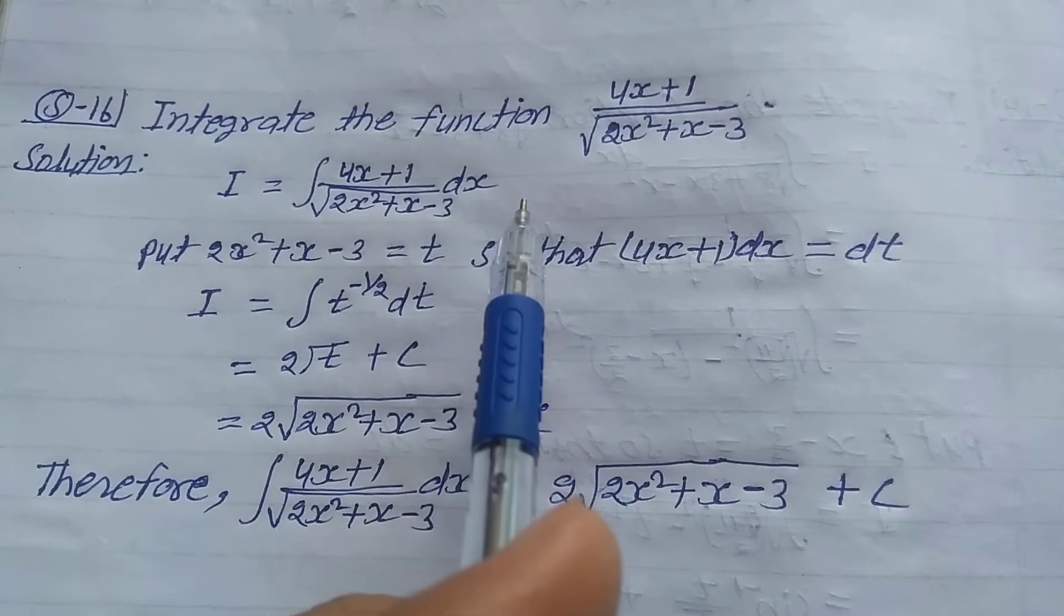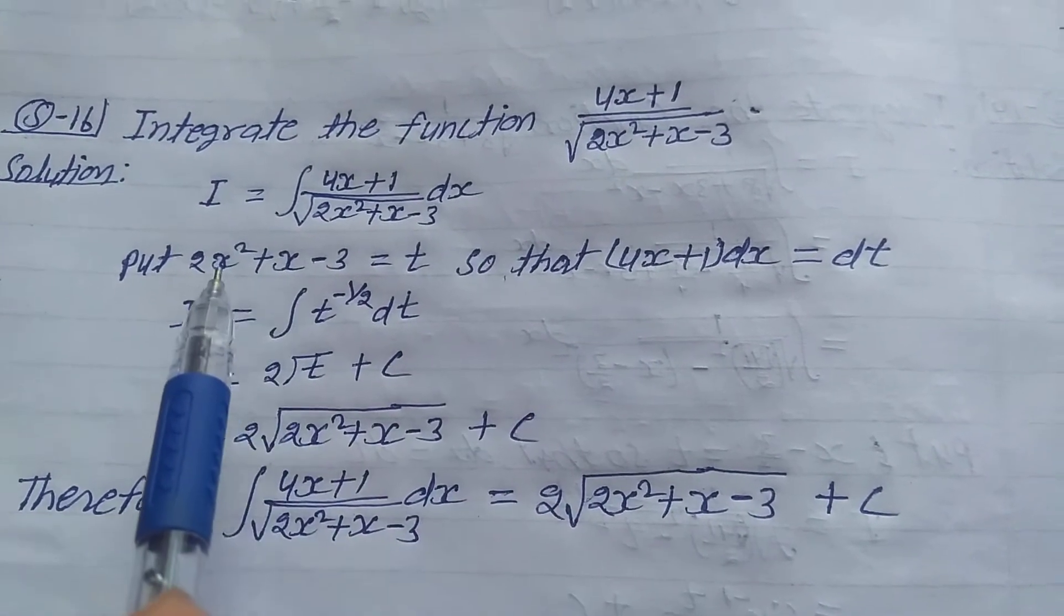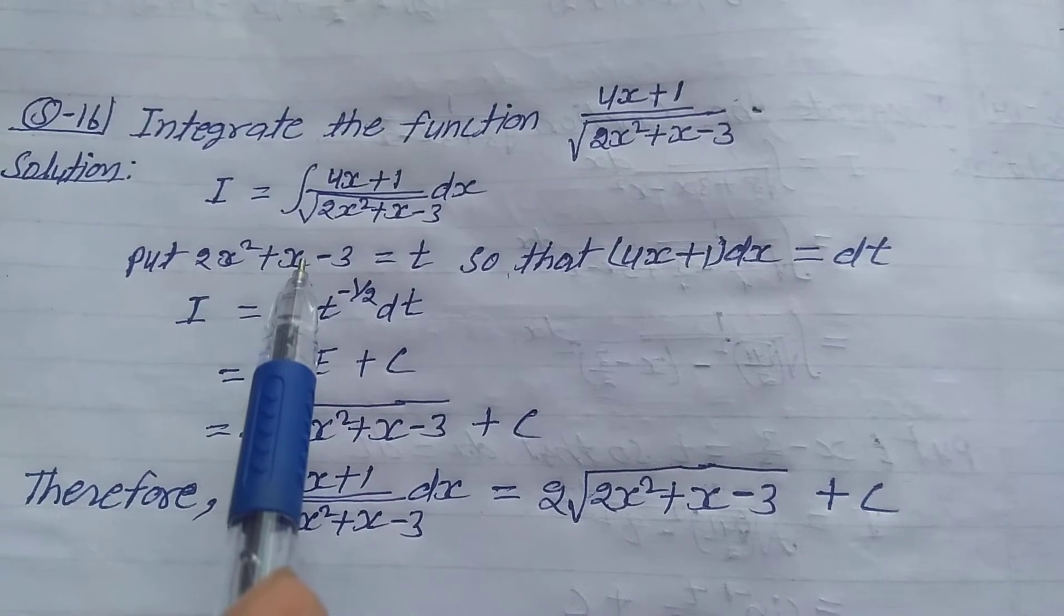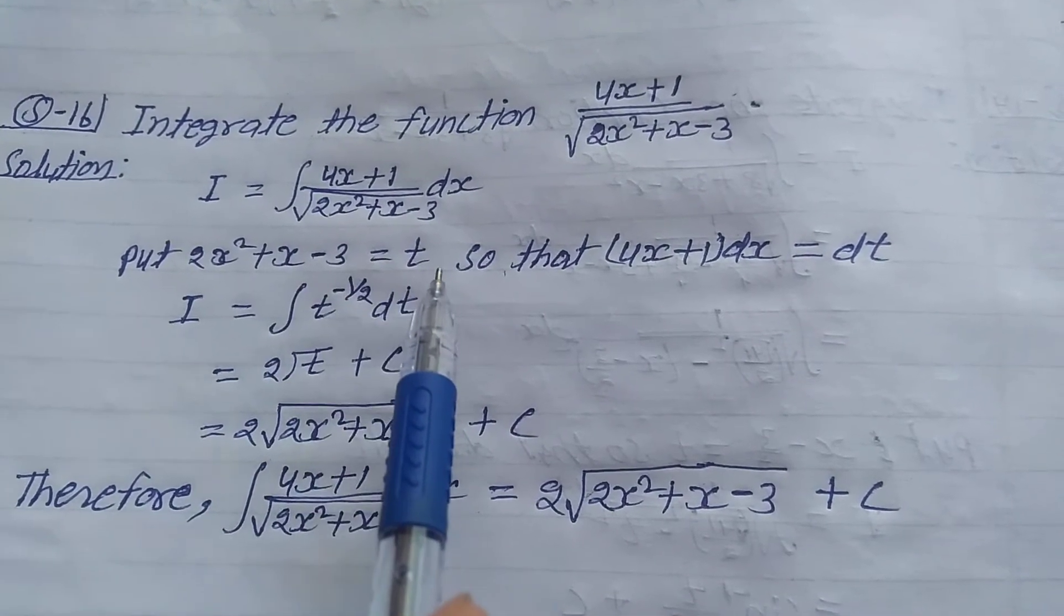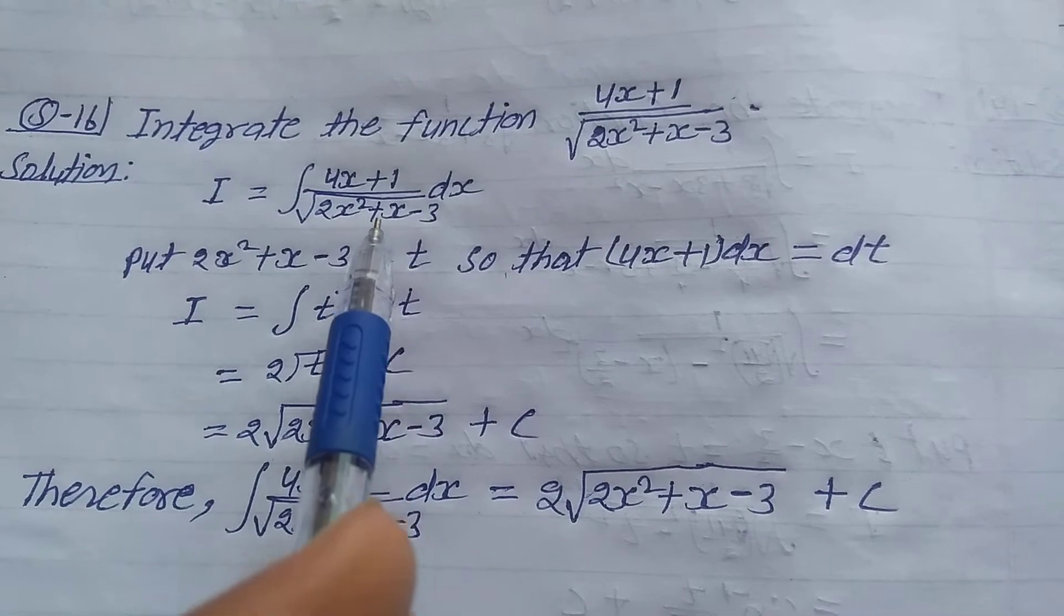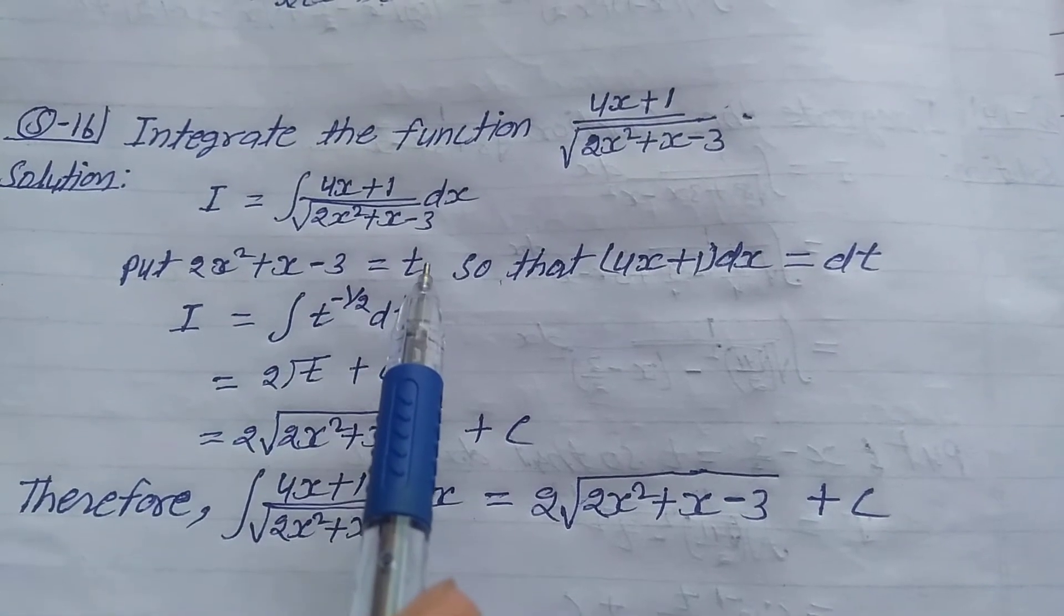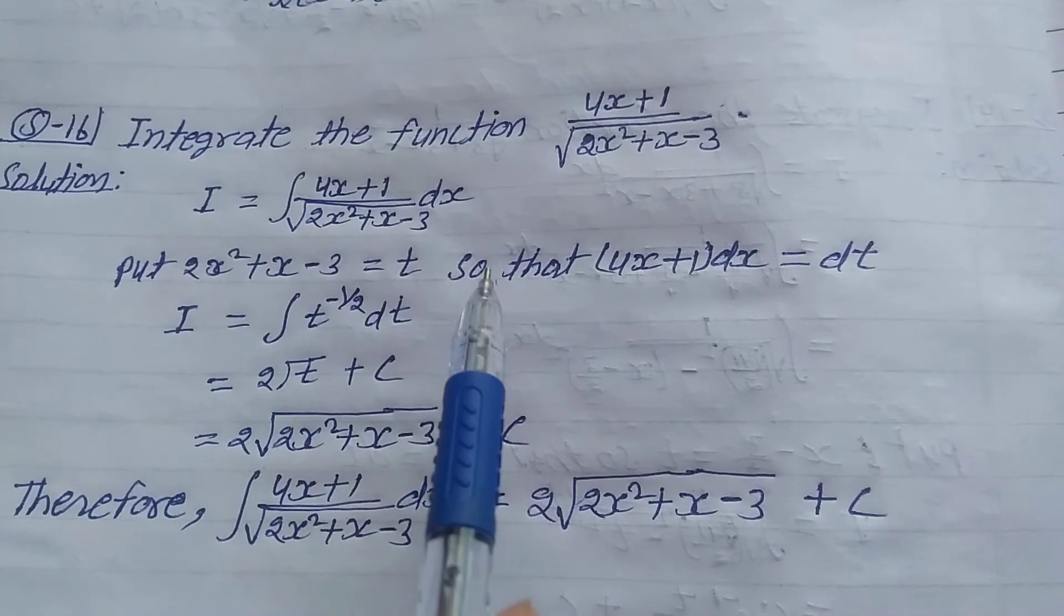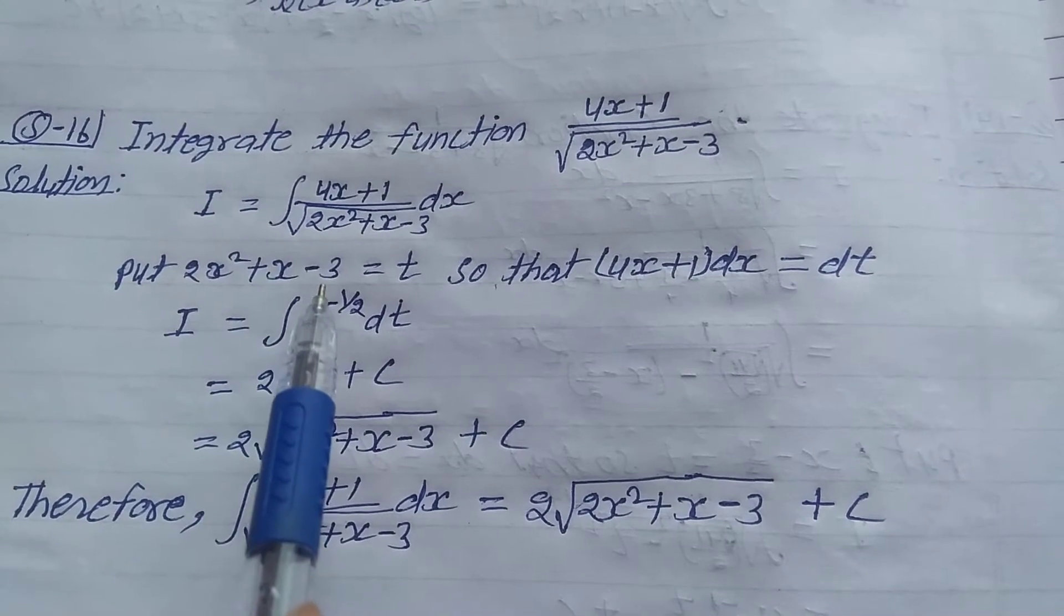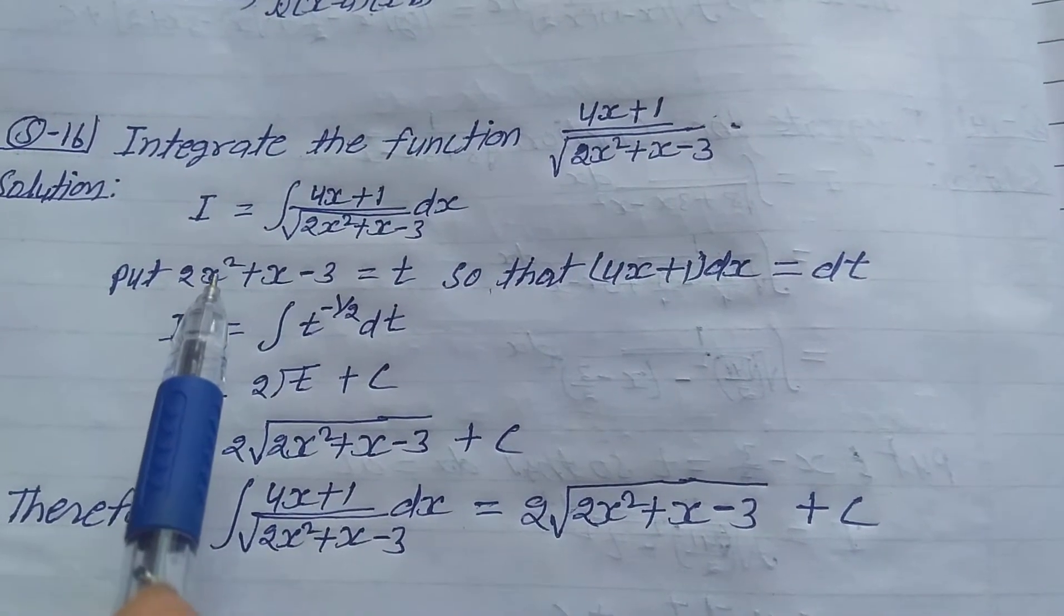Put 2x² + x - 3 equals t, so the function inside the root equals t. Differentiate both sides with respect to x. So 2 is constant, x² differentiated is 2x.